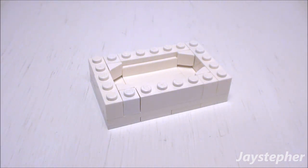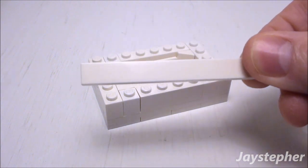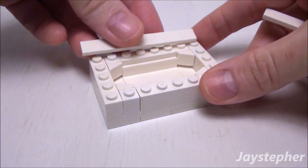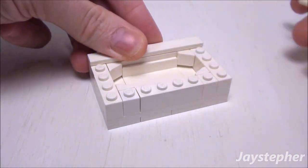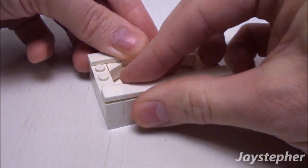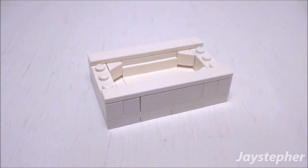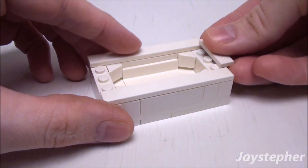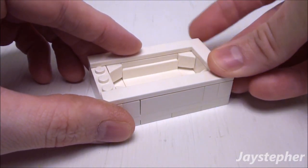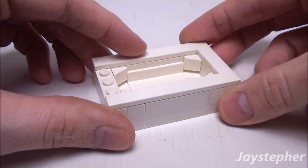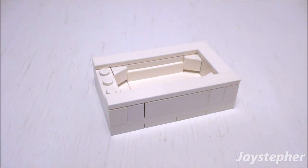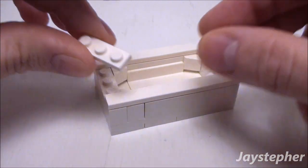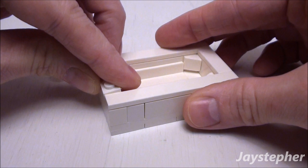Now to smooth off the top of the tub, take two 1 by 8 flat tiles. Let's place one on the top and one on the bottom, followed by one 1 by 3 flat tile on the right. On the other side, I'd like to build a faucet assembly, so use a 1 by 3 plate and place it on the left.